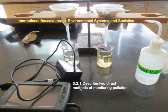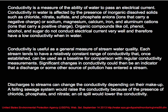Welcome again. Today we examine 5.2.1 — describe two direct methods of monitoring pollution. Today we consider just one of those two methods: the use of conductivity measurements in aquatic systems. According to the United States Environmental Protection Agency, conductivity is a measure of the ability of water to pass an electric current.